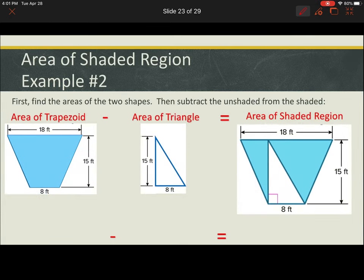The area of the trapezoid, again applying the formula, one-half of the two bases added times the height. Substitute in what we know, and we have an area of the trapezoid of 195 feet squared. The area of the triangle, that's the section that's missing or not shaded. Formula: one-half base times height, and we have an area of 60 feet squared.